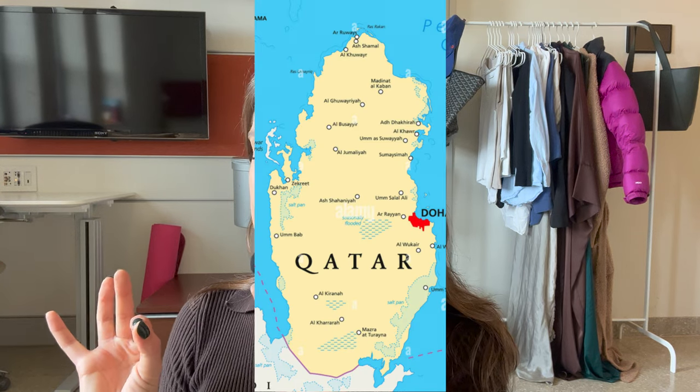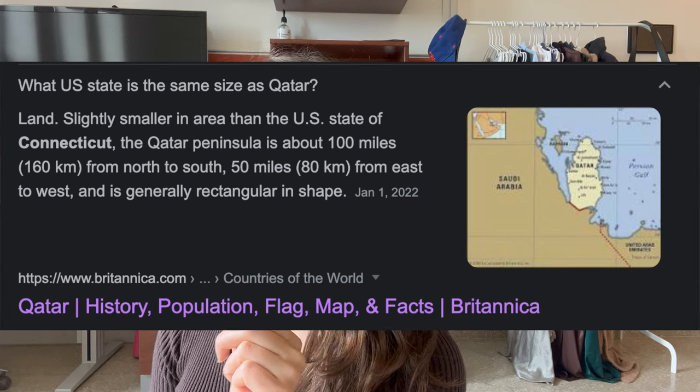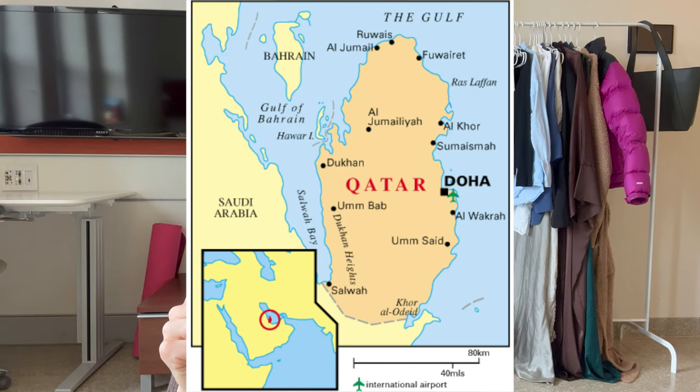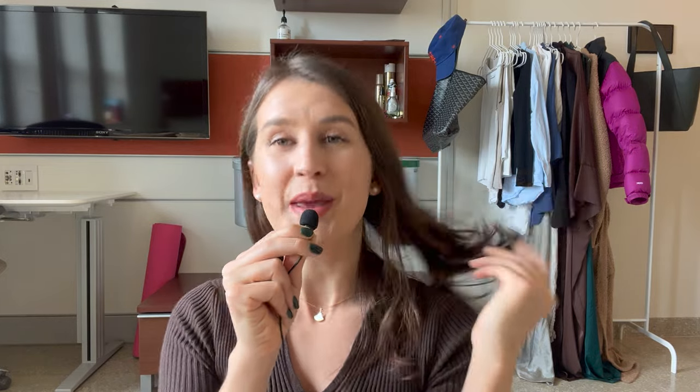Qatar is a very small country located in the Persian/Arab Gulf, also known as one of the Gulf countries. The countries surrounding Qatar include Saudi Arabia, the UAE or United Arab Emirates, as well as Bahrain to the north. In terms of size, Qatar is slightly smaller in area than the U.S. state of Connecticut. The peninsula is about 100 miles or 160 kilometers from north to south, and 50 miles or 80 kilometers from east to west.